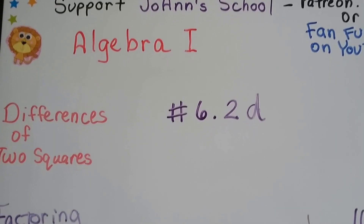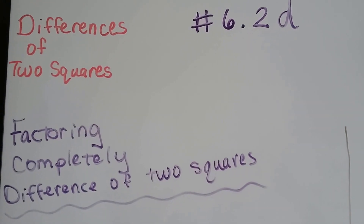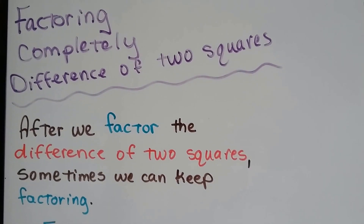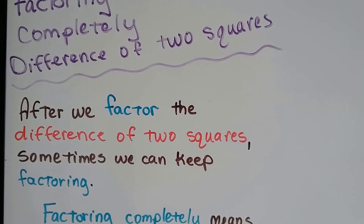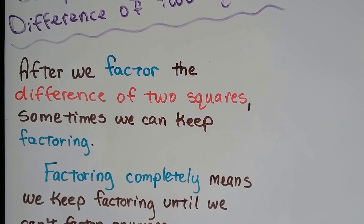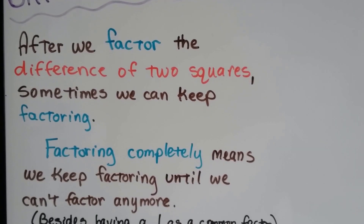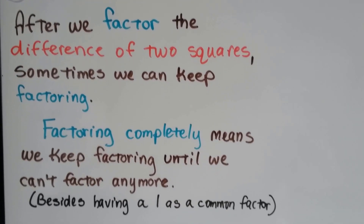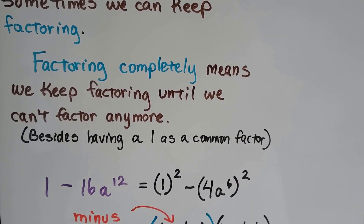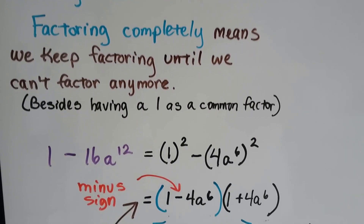Algebra 1, 6.2d, factoring completely the difference of two squares. We've been talking a lot about the difference of two squares. This is the last of the four videos that we talked about it, and there'll be links to the other three in the description. After we factor the difference of two squares, sometimes we can keep factoring. Factoring completely means we keep factoring until we can't factor any more, besides having 1 as a common factor.